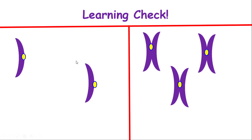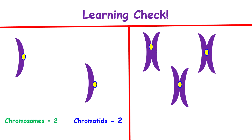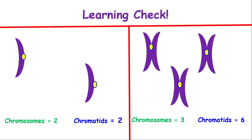To check your learning, let's count how many chromosomes and chromatids are on the left. Remember, you count the number of centromeres for chromosomes. You should see two centromeres, which means two chromosomes, and two chromatids. Well done if you got that. On the right, you should notice three centromeres, which means three chromosomes, and six chromatids. Well done if you got those numbers.